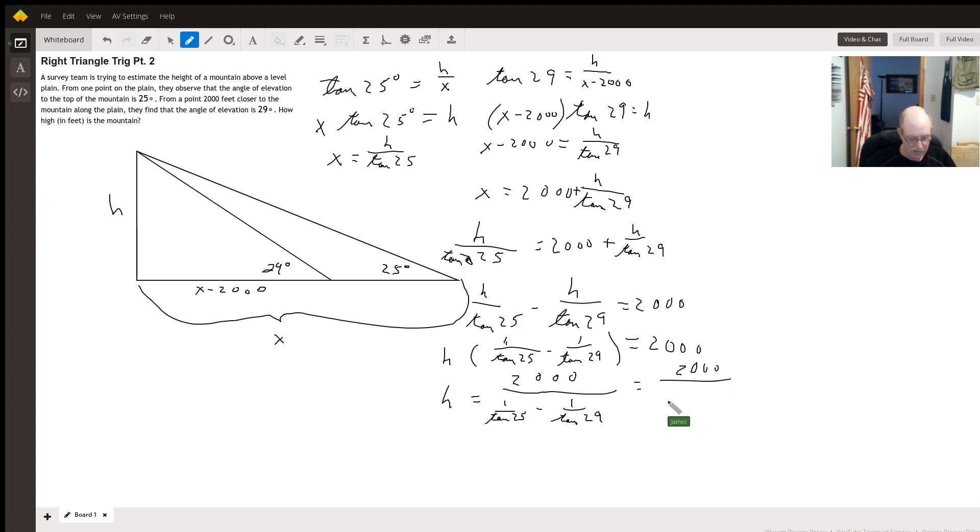And I get that's going to be 0.3405 when I round off to a couple decimal places. And then I take 2,000 divided by that. And I get 5,874.420 feet.